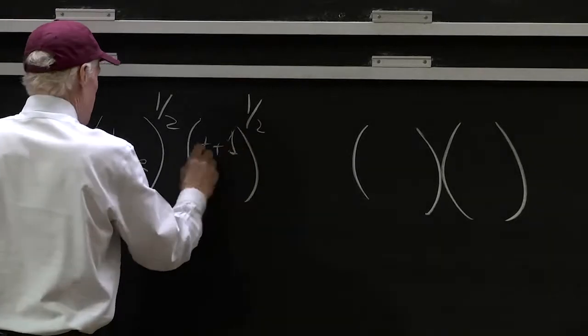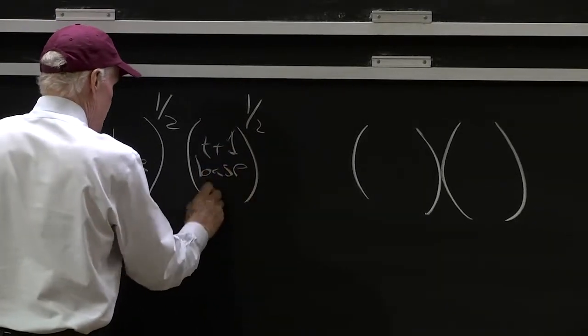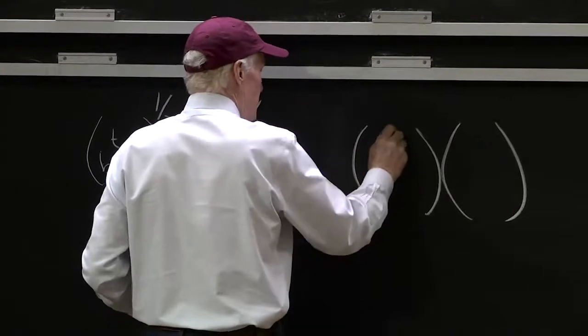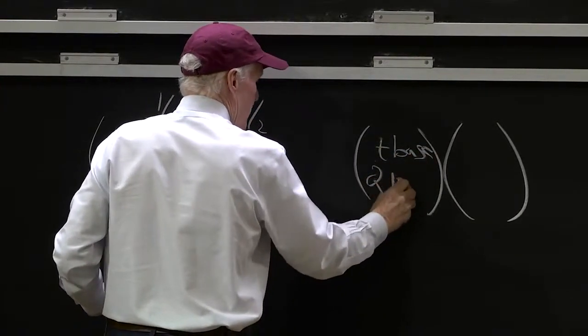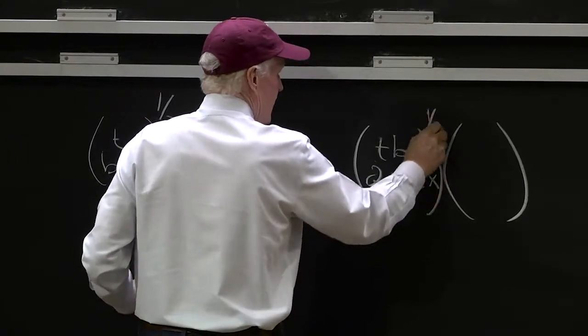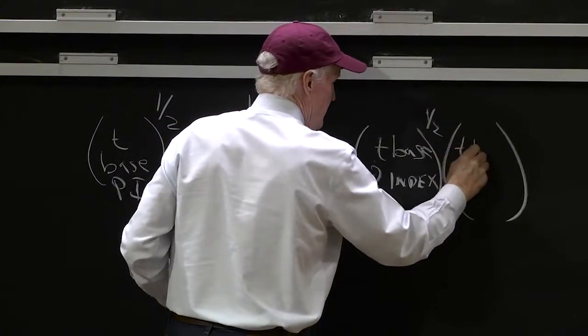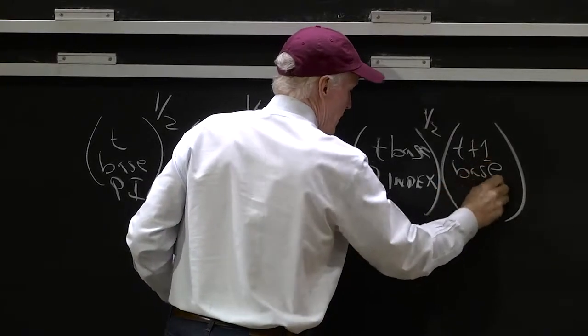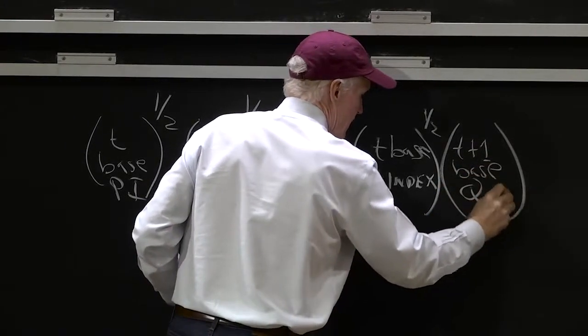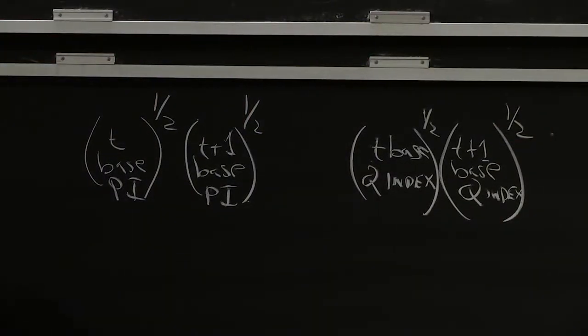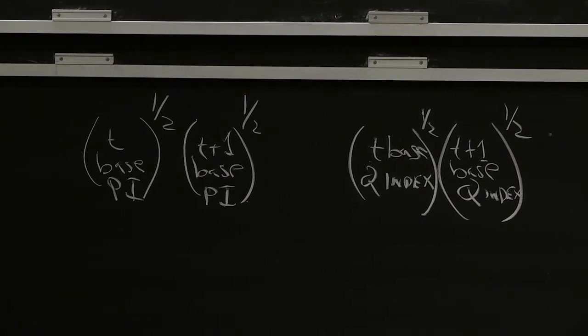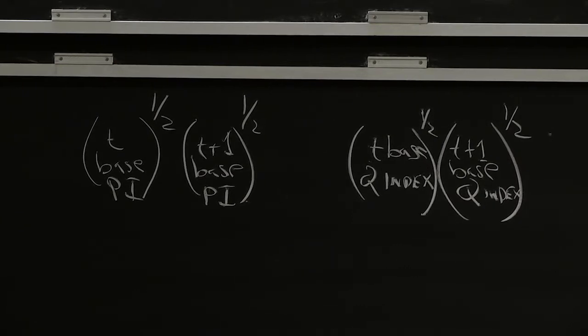And this would be a t base quantity and a t plus 1 base quantity. I think that's usually called Fisher's Ideal Index that kind of combines these two together. And the idea is, well I know one's too big and one's too small, so what about averaging them? That probably makes some sense.